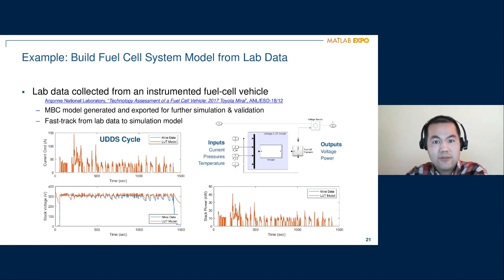So here is an example of application of this workflow for fuel cell modeling. We skipped the first two steps, the DOE and the data collection because data is readily available. Argonne National Lab has done this test on a Toyota Mirai and made the data available.